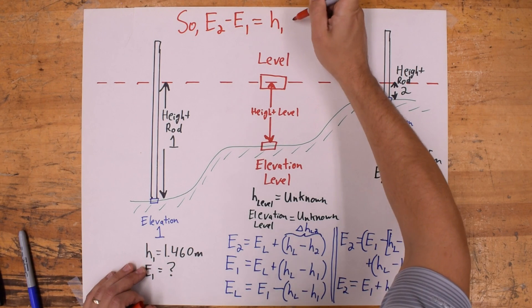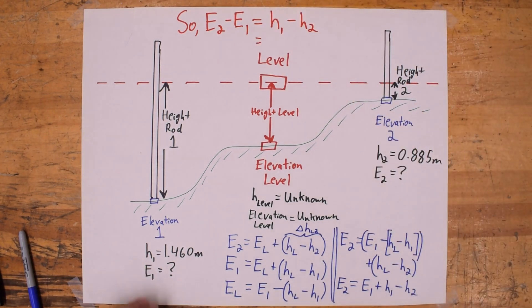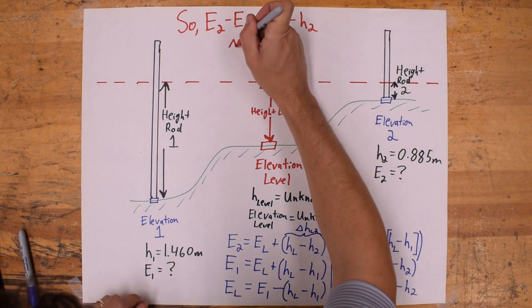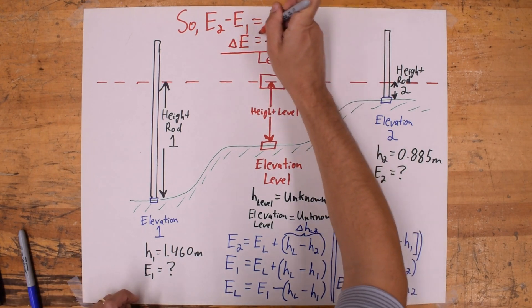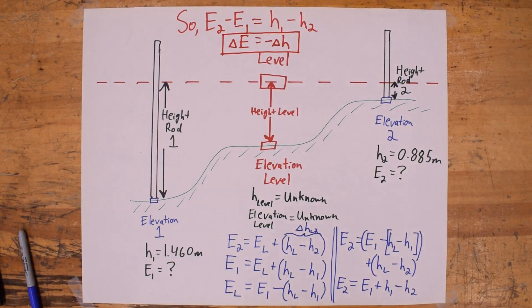So rearranging again, we get the change in elevation is equal to the negative change in the reading of the level rod, the negative change in height.